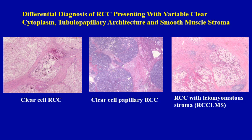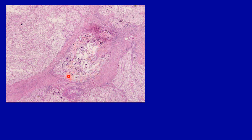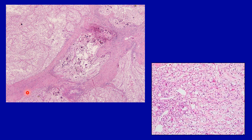Let's discuss morphology clues for the diagnosis. Morphology clue number one for clear cell tumors: when you see the presence of at least focally predominantly displayed acini with delicate, intricately branching vasculature — also referred to as racemose vasculature — within a tumor, it usually supports the diagnosis of clear cell renal cell carcinoma. You typically see this feature in low-grade areas, so extensive sampling is key to diagnosing clear cell RCC. Here is one such example showing a relatively clear-looking tumor with prominent nodules separated by smooth muscle stroma, but in well-differentiated areas the delicate intricately branching vasculature is identifiable.